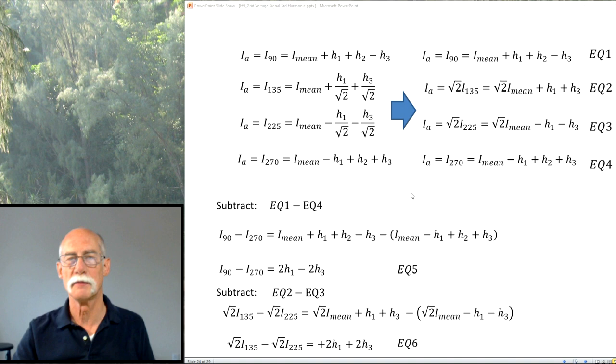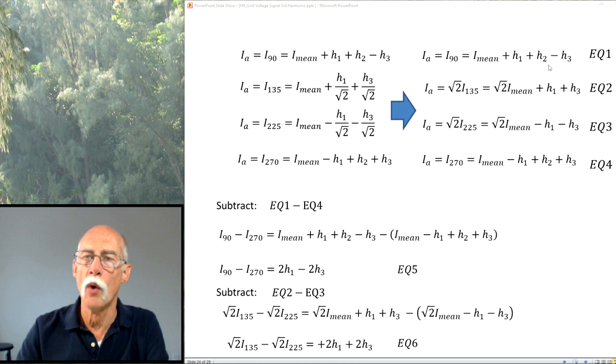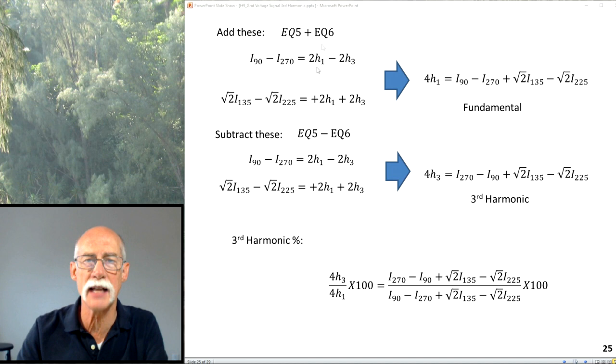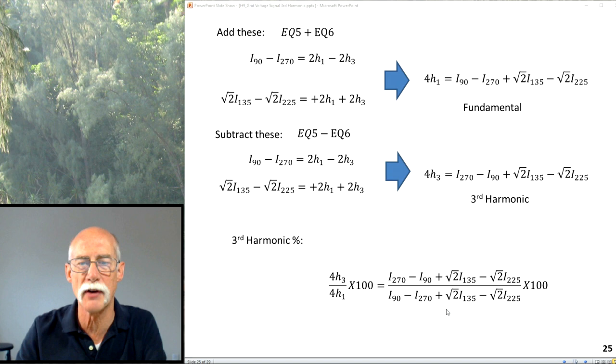So we're going to take one and four, and we're going to add and subtract those things in order to reduce terms. In this case, we want to get rid of H2. And then we should add and subtract equation six, which we calculate here. We do the same thing, and then we can eliminate and get down to and solve for H1. Now we have H1. And we can solve for H3. And when we look at that, we can then take the ratio of H3 over H1 times 100, and you have your percent third harmonic.